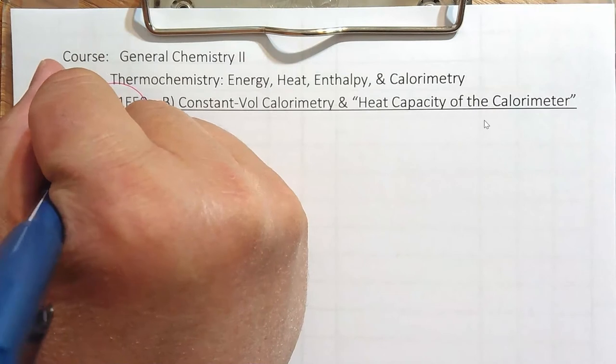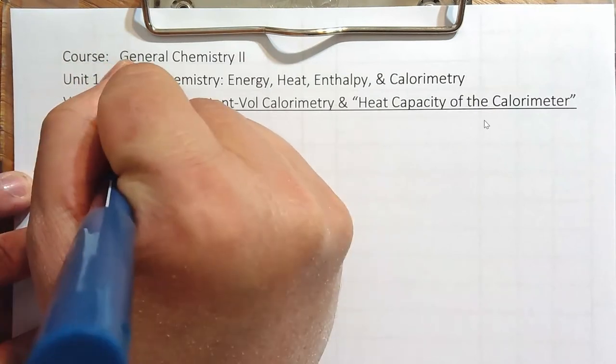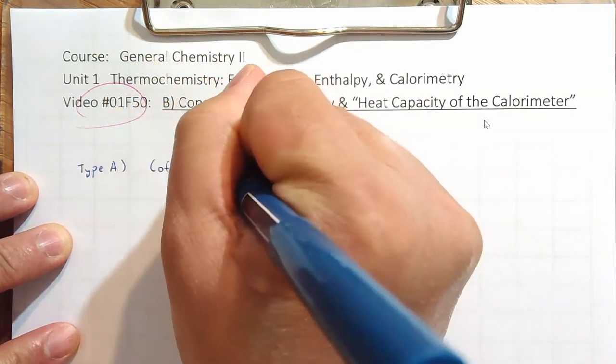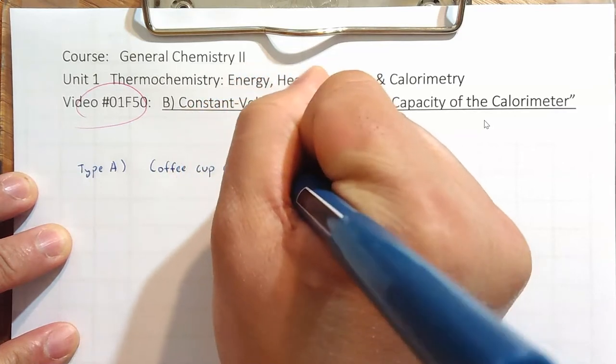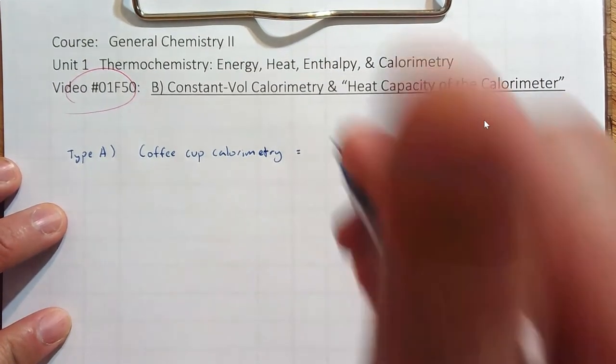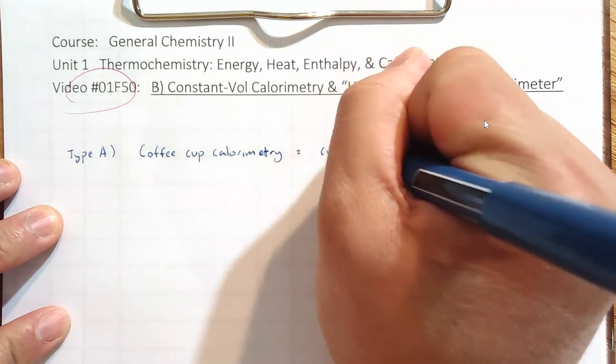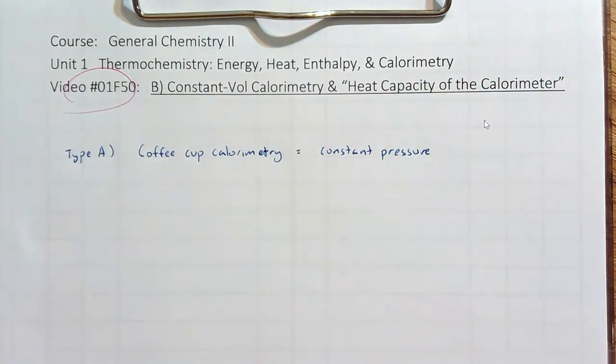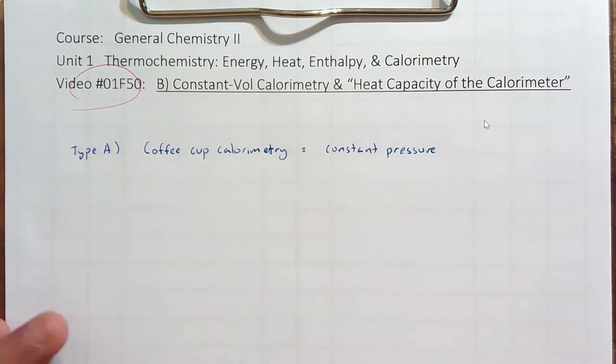Let me just reintroduce you to calorimetry. I call it type A. In a previous video, we discussed coffee cup calorimetry, and that is the same as constant pressure. We're most familiar with this type of calorimetry. Most of the reactions that we do, there isn't really a change in the pressure. And in this setup, if there is an increase in pressure, it's easily released because we're not really capping the coffee cup or the styrofoam cup very well.